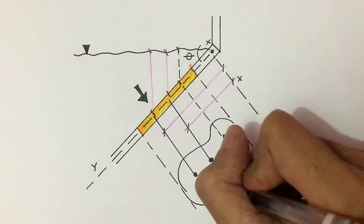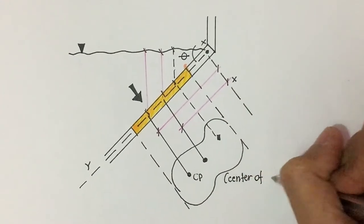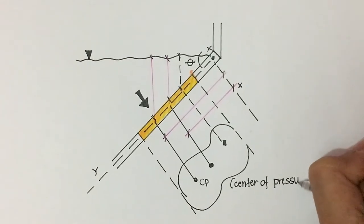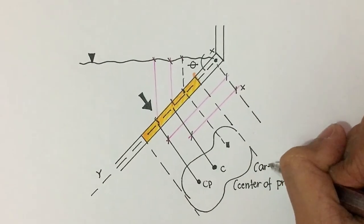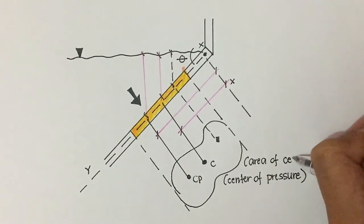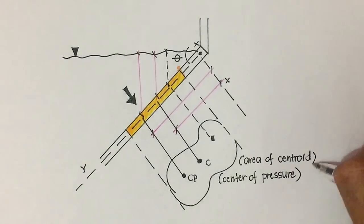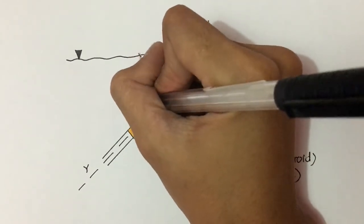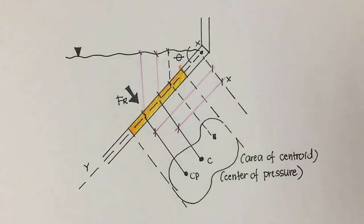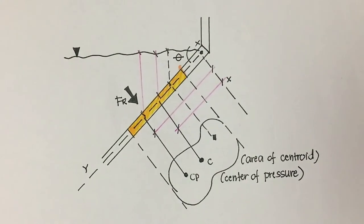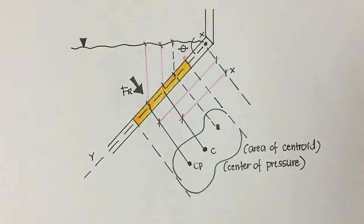First, let's assume that the center of pressure is located here, and the area of the centroid is located here. The resultant force, denoted as FR, is acting perpendicular to the plane since no shear force is present when the fluid is at rest. The resultant force has a line of action that passes through the point XCP, YCP, which is called the center of pressure.